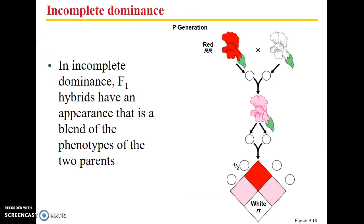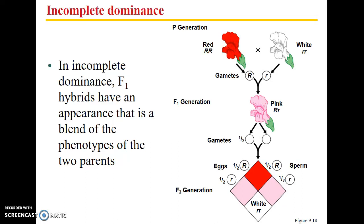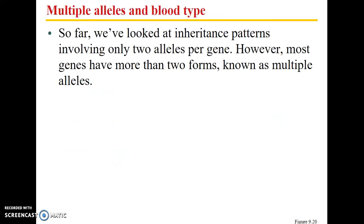Welcome back. In incomplete dominance, alleles are both expressed but give an intermediate phenotype between the parental phenotypes. We saw this with a red flower and a white flower: the F1 generation produces pink, a blending of red and white. In the F2 generation you see both original parental phenotypes as well as the F1 phenotype coming out.